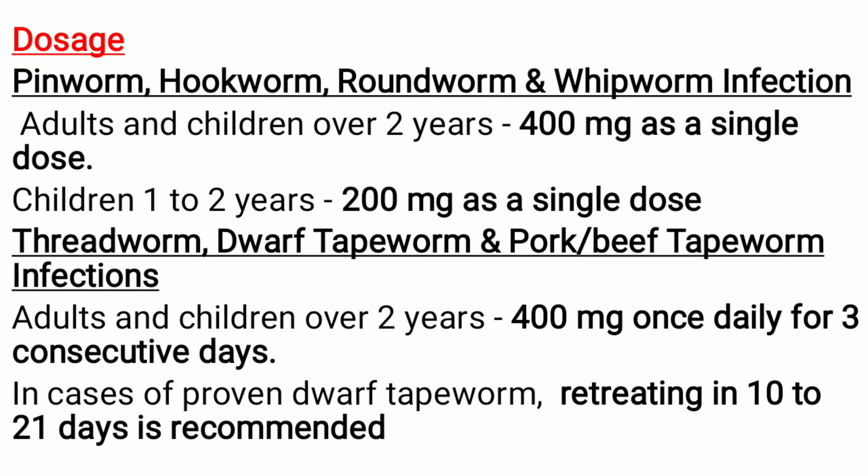Dosage: for pinworm, hookworm, roundworm, and whipworm infection — adults and children over 2 years of age, the dose is usually 400 mg as a single dose. Children between 1 to 2 years, the dose is 200 mg as a single dose. In threadworm, dwarf tapeworm, and pork or beef tapeworm infection — adults and children over 2 years of age, the dose is 400 mg once daily for 3 consecutive days. In cases of proven dwarf tapeworm, retreating in 10 to 21 days is recommended.